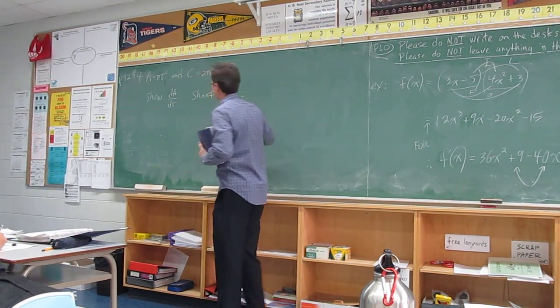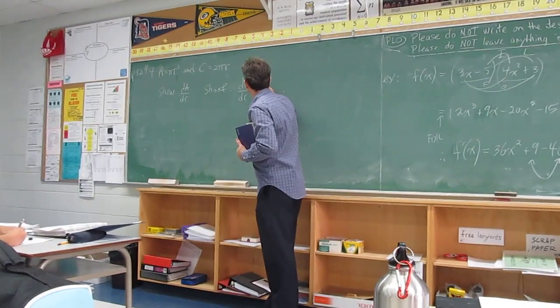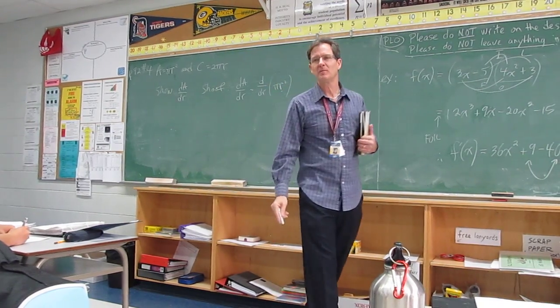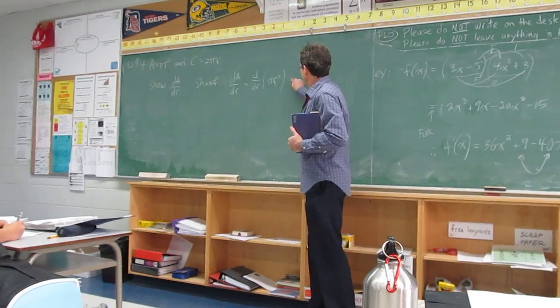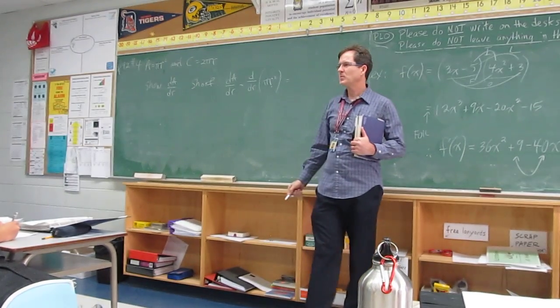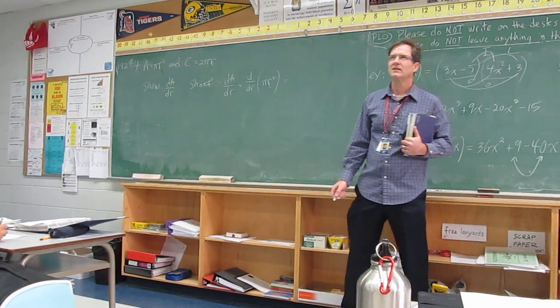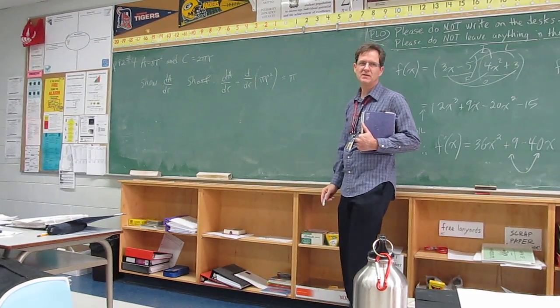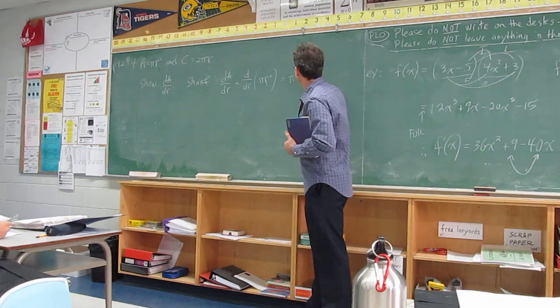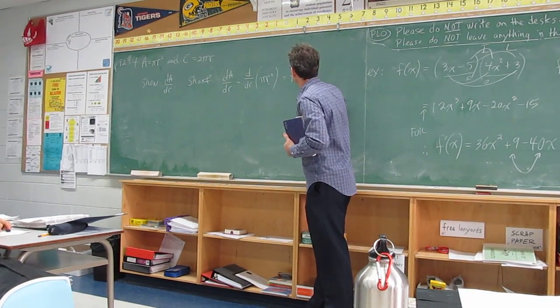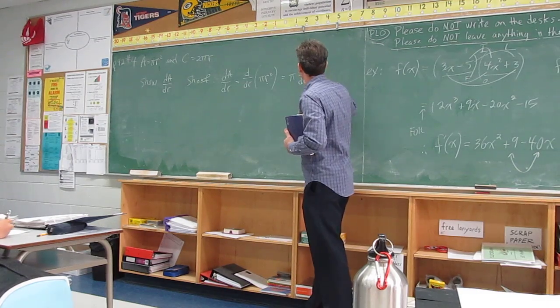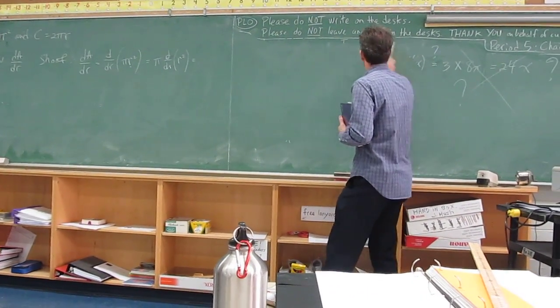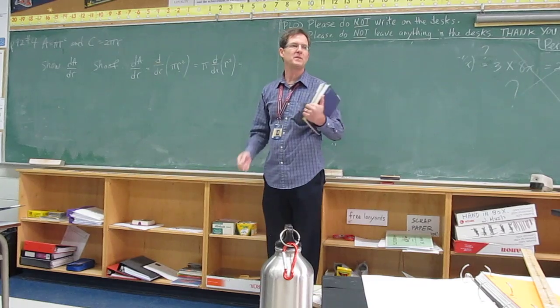dA dr is equal to the derivative with respect to r of A. What's A? Pi r squared. I know pi r squared, pi r round, but they say pi r squared for some reason. Pi is a constant, right? 3.1415926, etc. I'll recite it in more detail tomorrow probably. So we can factor that out. Pi r squared. That's the constant multiple rule. Times the derivative with respect to r of r squared. Now normally we have the derivative with respect to x. It doesn't matter what the variable is. If the derivative with respect to x of x squared is 2x, what's the derivative with respect to r of r squared?